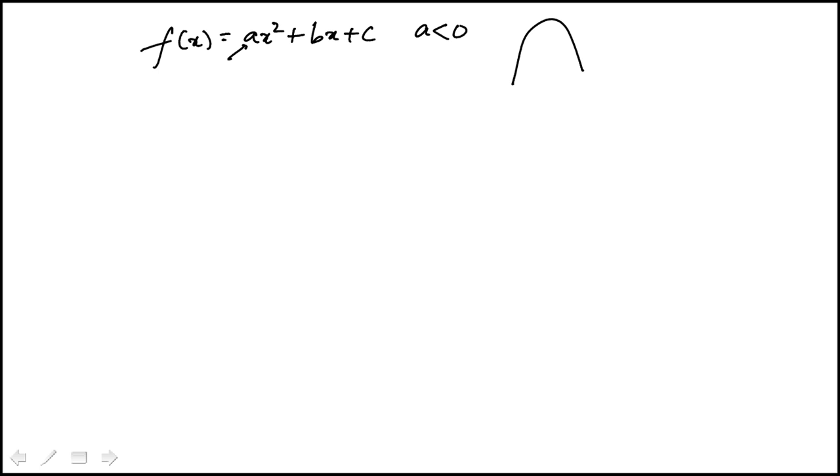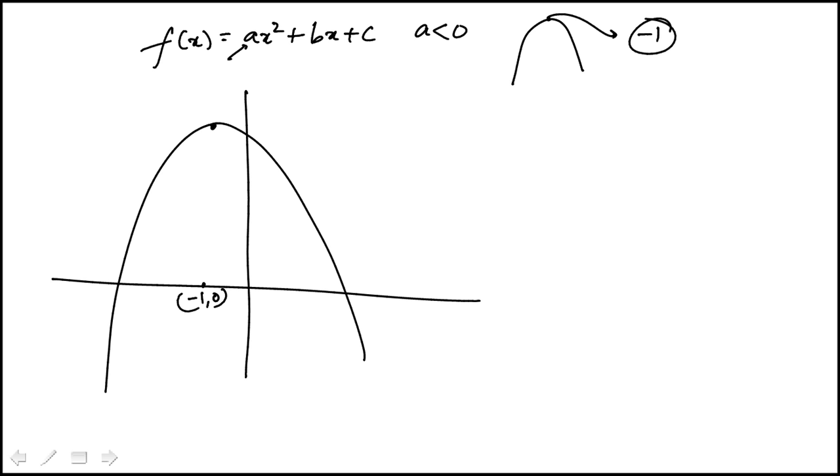And the second thing is that the x-coordinate of the vertex is minus 1. That means if I were to qualitatively draw this out, it would have a maxima here at minus 1, and it would look something like that. We don't know the y-coordinate. We don't need to.